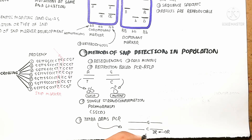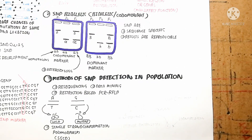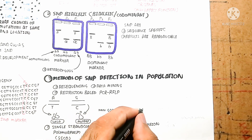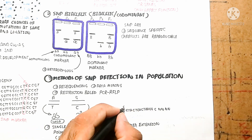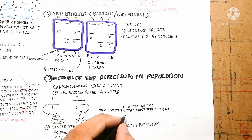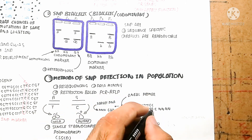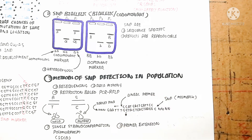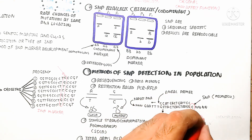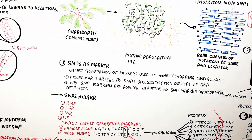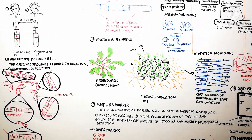Another method is the Tetra-ARMS PCR, shown in the figure, which uses PCR with guanine and cytosine primers in an annealing process. Additionally, primer extension is used — this checks where extension does not occur, identifying the SNP that is not read during the annealing primer process. A dedicated video will provide more detail on these SNP detection methods. Thanks for watching — please subscribe for more videos about SNP.